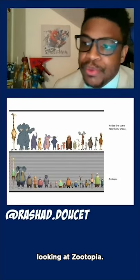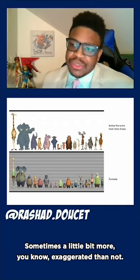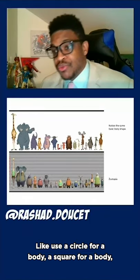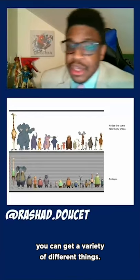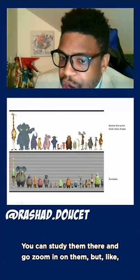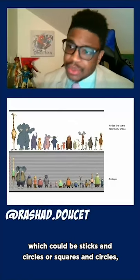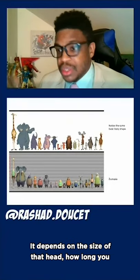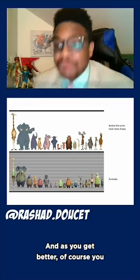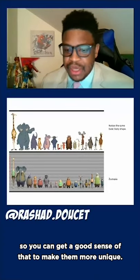This is one of my other favorite examples looking at Zootopia. It doesn't matter really what your style is — you can still make it work, sometimes more exaggerated than not. If you get a base head shape and a base body shape, like a circle for a body or a square for a body, you can get a variety of different things. All the animals basically have these little square teardrop bodies, and then you add heads and legs — which could be sticks and circles or squares and circles — and you get a variety of different bodies. As you get better, you start fine-tuning the anatomy more consistently.